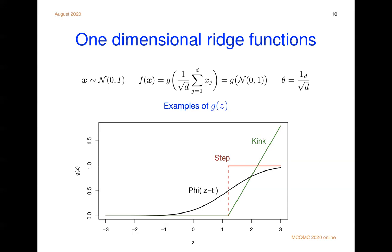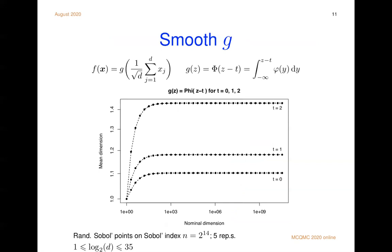Let's look at the smooth function. So the smooth function, we take g of that linear combination of the x's and calculate its mean dimension. The nominal dimension is going to be one or two or four or eight or 16 or 32. So we look at a sample of nominal dimensions. Those nominal dimensions go up to 35 billion.